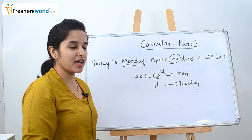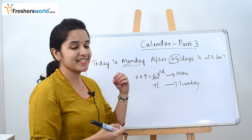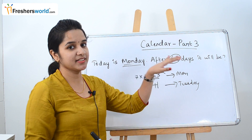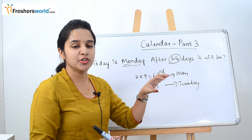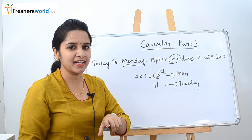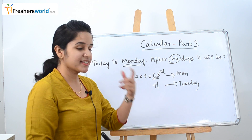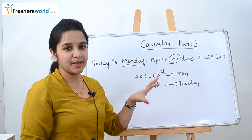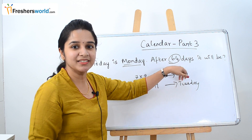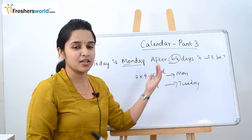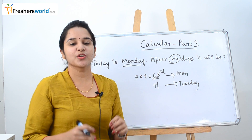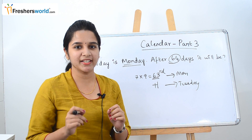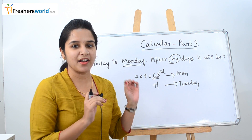Similarly, if they ask what the 62nd day is — since we know the 63rd day is Monday, we subtract one, so the 62nd day becomes Sunday. For any such question, go to the closest multiple of 7 to find the correct day.